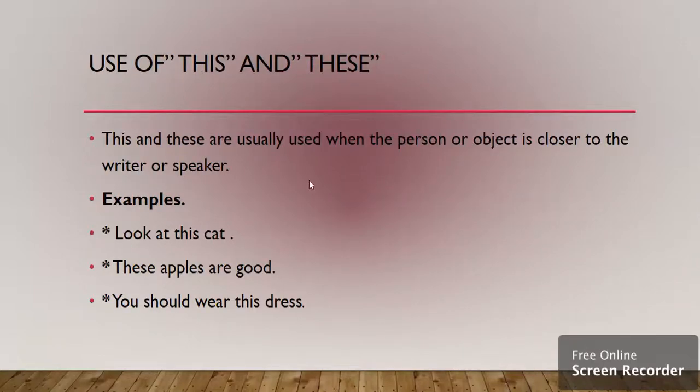Use of this and these. This and these are usually used when the person or object is closer to the writer or speaker. We use this word for the singular and these for plural, when the object or person is closer to the writer or speaker.